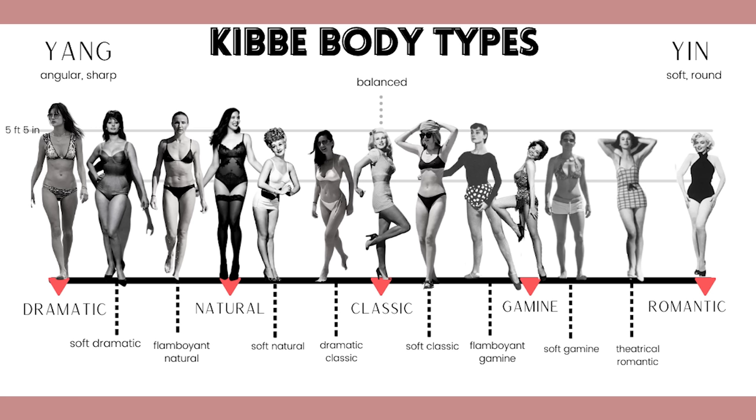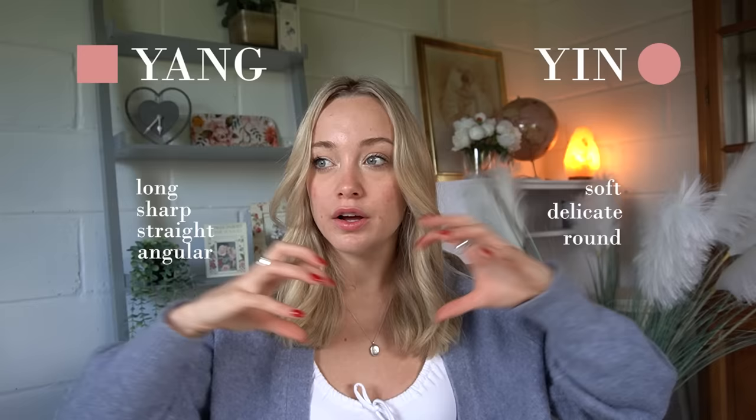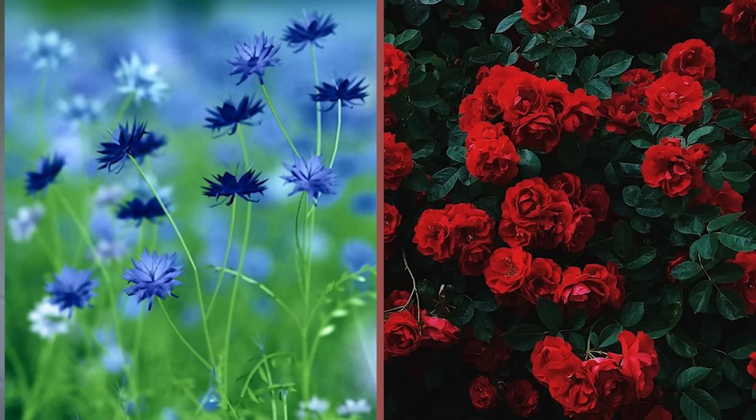These body types are based around the idea of yin and yang — yin being soft, delicate, rounded; yang being long, sharp, straight, angular. These are kind of dichotomies, opposing energies that we of course come from ancient Chinese culture and we see everywhere in nature, including in our bodies.